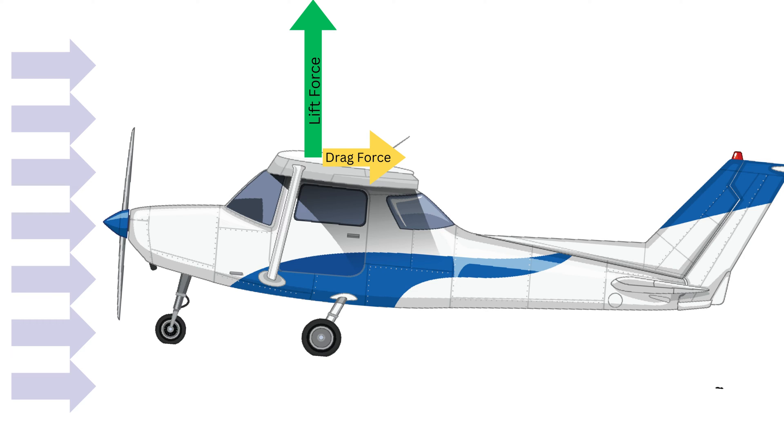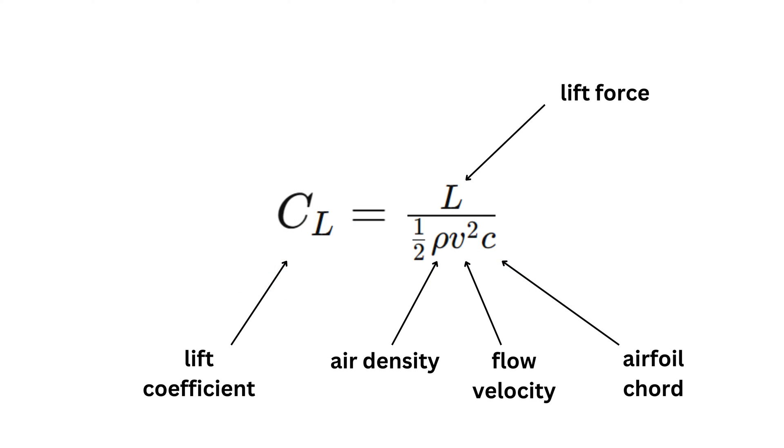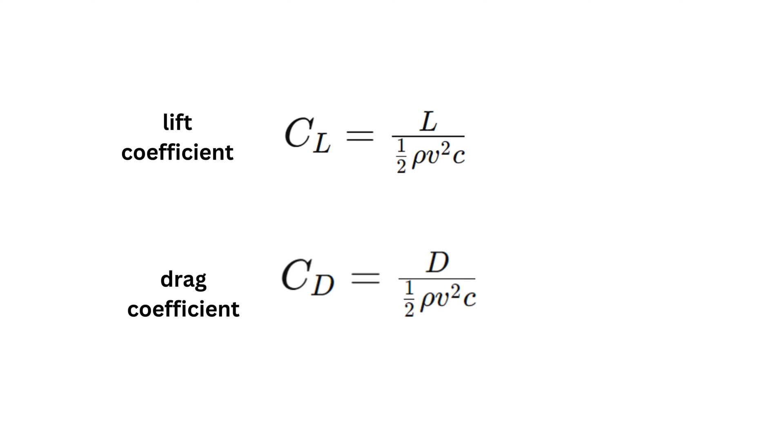In aerodynamics, you don't usually deal with the lift and drag forces themselves, but with lift and drag coefficients. By dividing the lift force by one half, times the air density, times the flow velocity squared, times the airfoil cord, you turn the lift into a dimensionless value, called the lift coefficient. Since we are dividing by velocity and size, the lift coefficient captures the aerodynamic lift characteristics of the shape, regardless of its size, or the speed of the flow it is in, making it a more general and useful measure than the lift force itself.